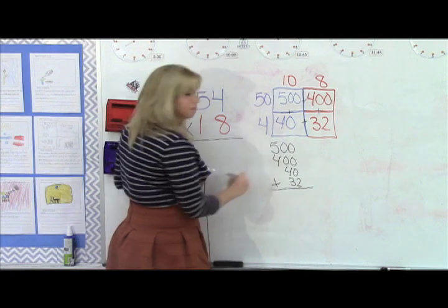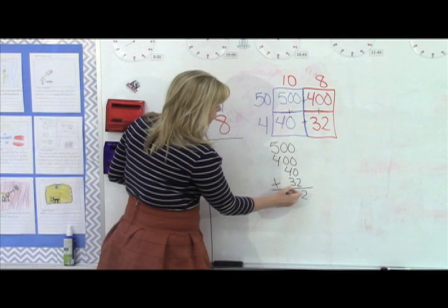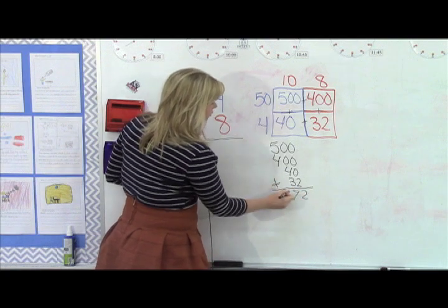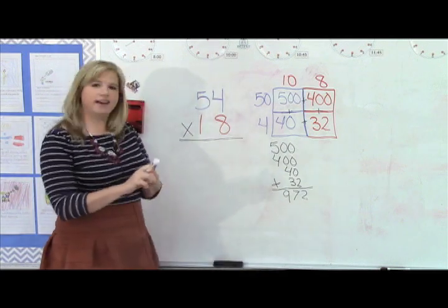Then we add them all together. So you've got two, four, and three makes seven, five and four makes nine. So our answer is 972.